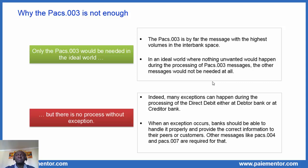That is because there is no process without exception. Indeed, many exceptions can happen during the processing of the direct debit, either at debtor bank or at creditor bank. When an exception occurs, banks should be able to handle it properly and provide the correct information to their peers or customers. The other messages in the interbank space are used for exception handling. One message is required to pull the funds, but many other messages are needed to handle the exceptions — for example, the Pax4 and the Pax7, which are used for specific purposes. We will come back to those messages in future videos.